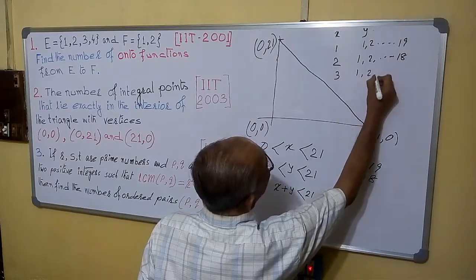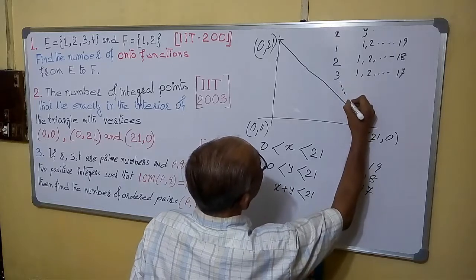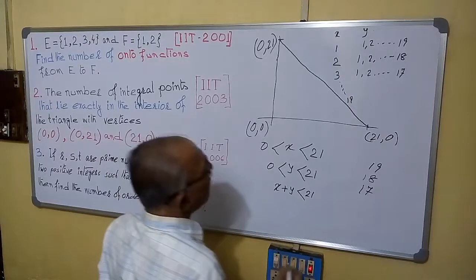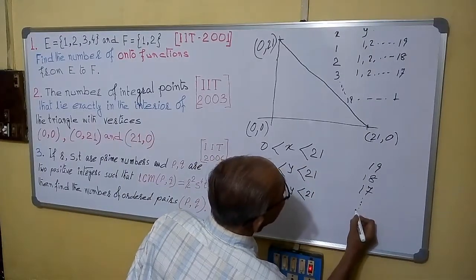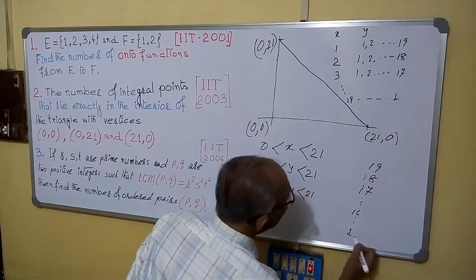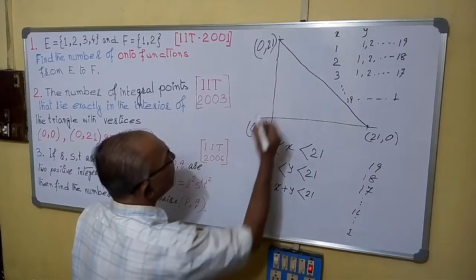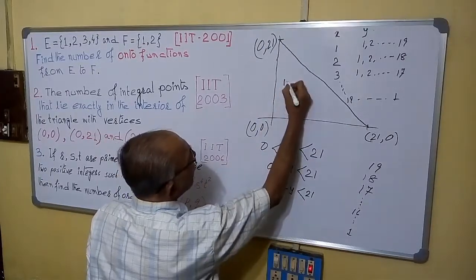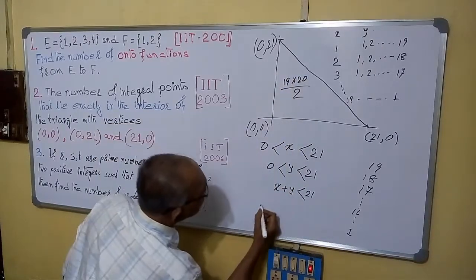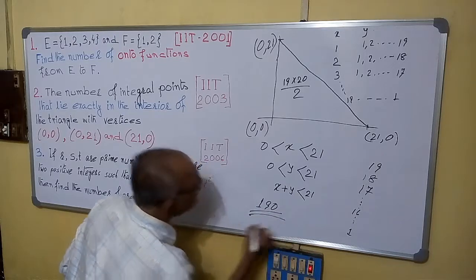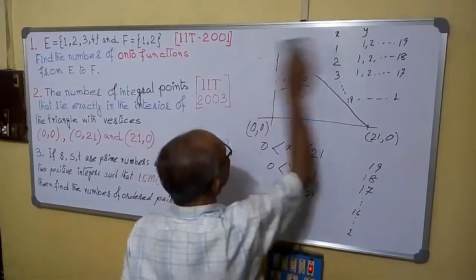Similarly, for 3, it will be 1, 2, up to 17. So you can choose this one in 17 ways. In this way, x will come, maximum value will be 19. And then, y can have only 1 value. So the values, so then in this way, it will come 16, in this way, up to 1. So total number of points will be sum of 1 to 19. You are knowing sum of natural numbers is n into n plus 1 by 2, 19 into 20 by 2, 2 into 10 is 20. So this will be 10 into 19 equals to 190. So this will be your number of integral points.